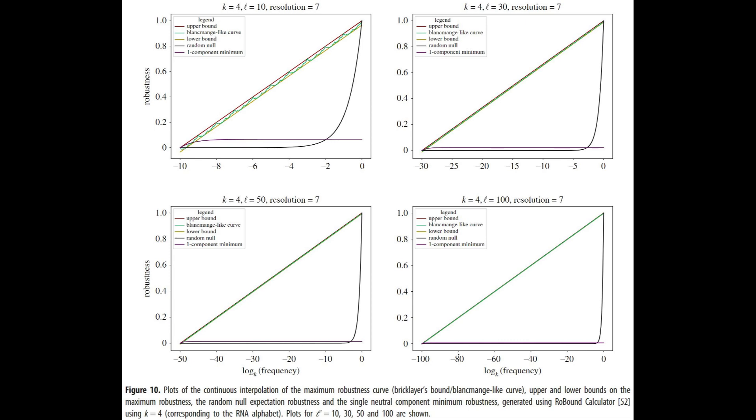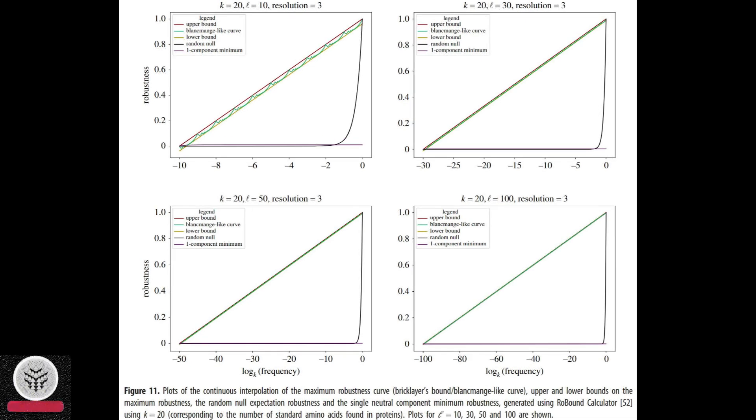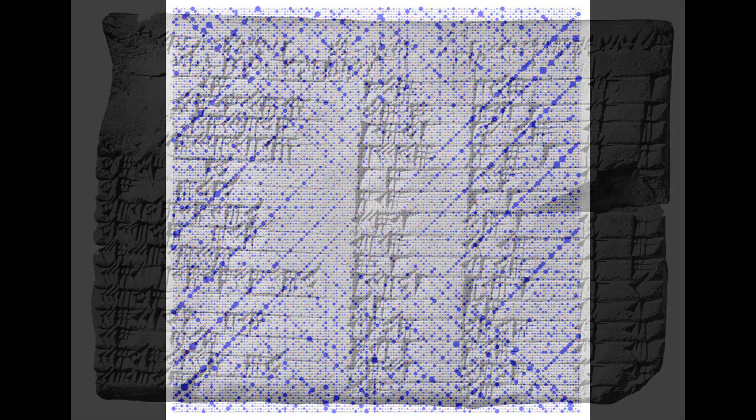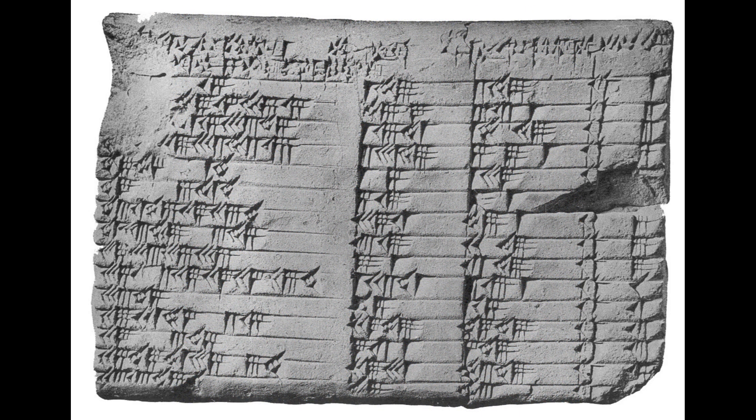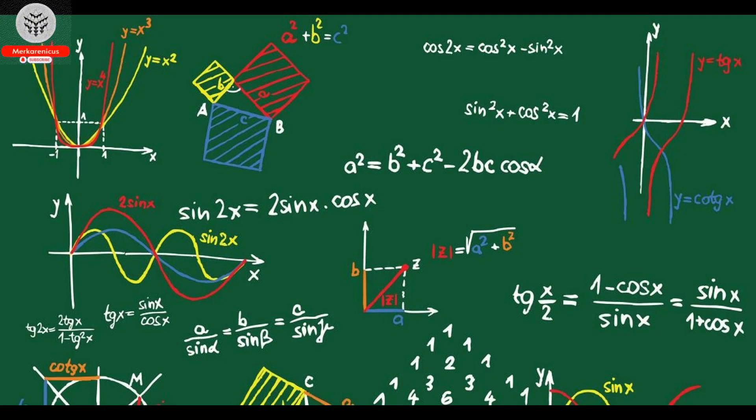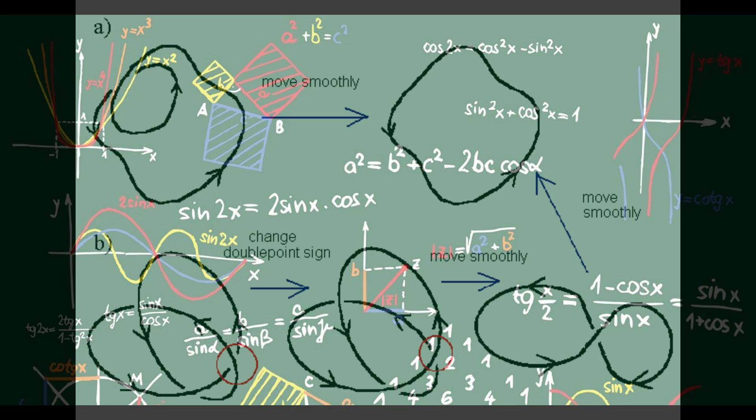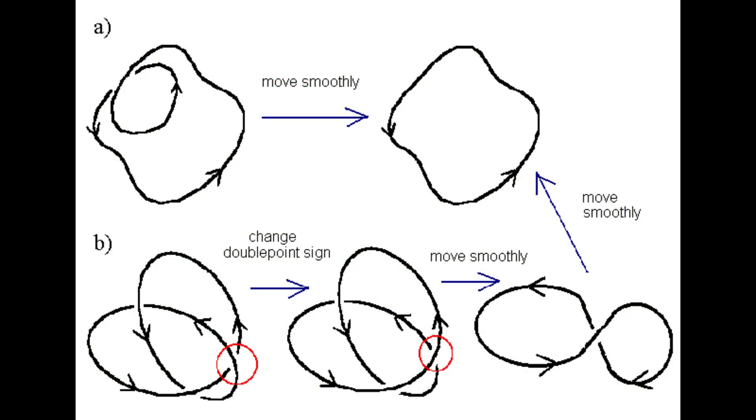This remarkable discovery holds significant implications for the field of evolutionary genetics. The study of number theory, which focuses on the properties of positive integers, is often regarded as the most pristine and fundamental branch of mathematics. Upon initial observation one might find it difficult to envision how this concept could be relevant to the natural world.